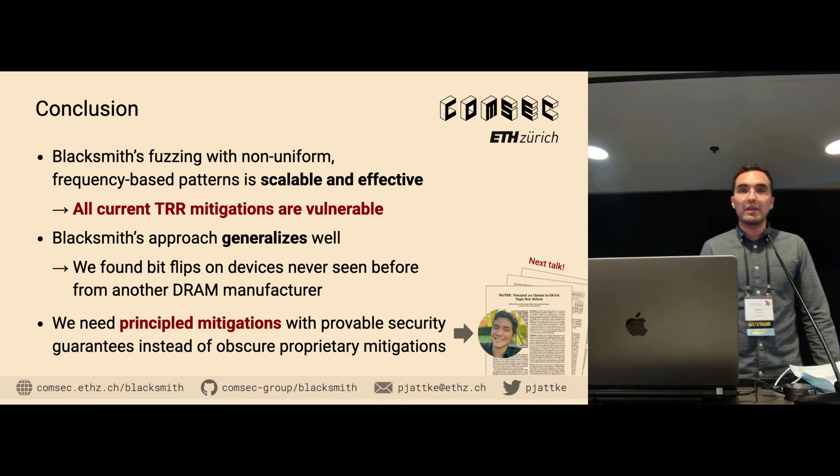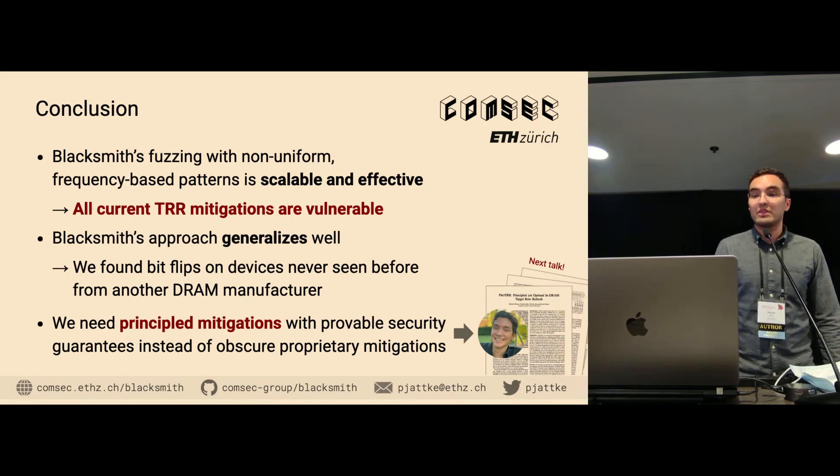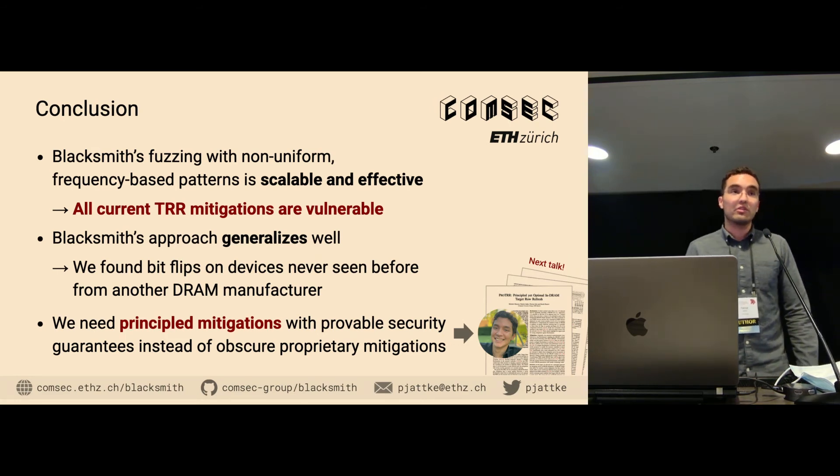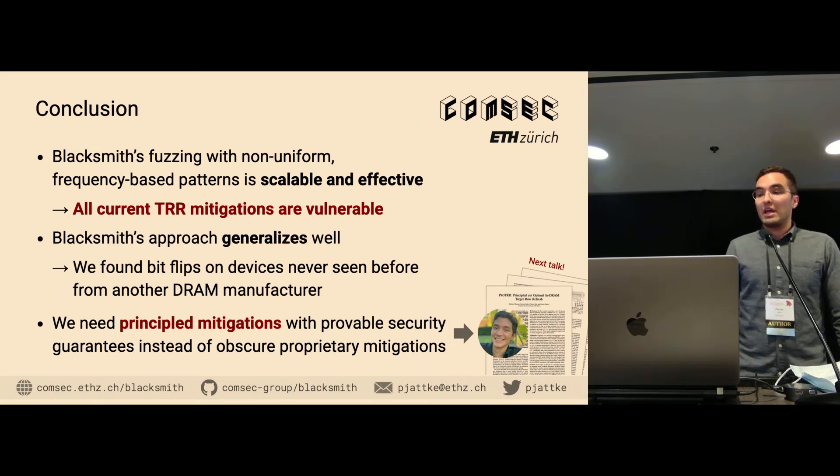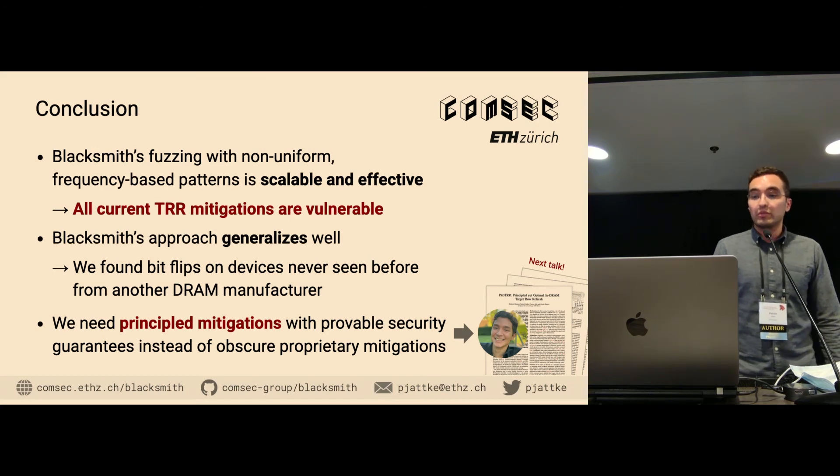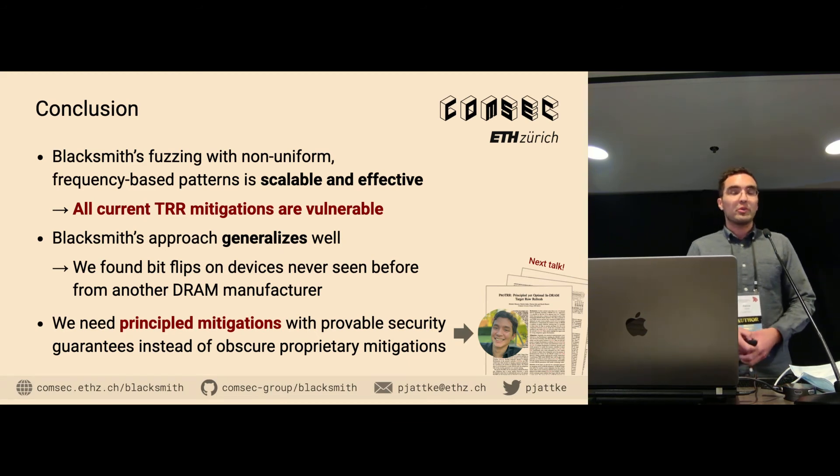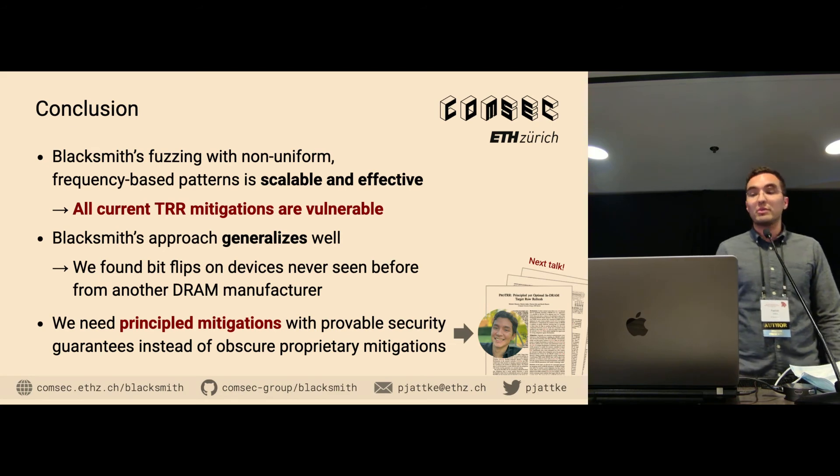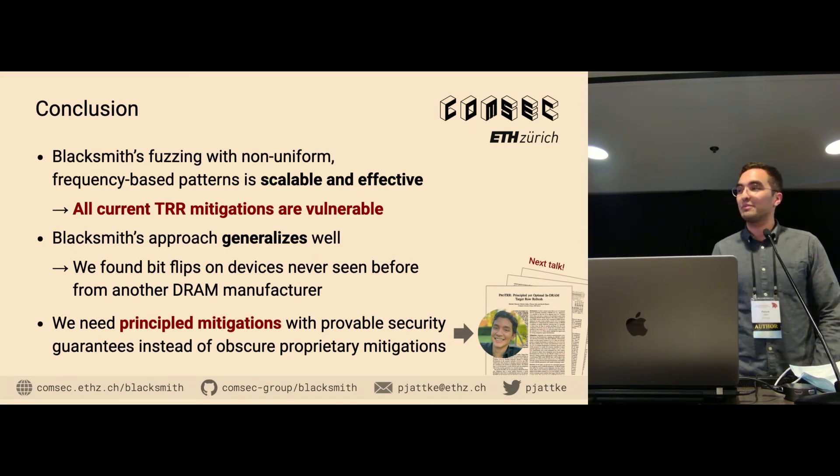So this concludes my talk. We've seen that Blacksmith with fuzzing and non-uniform frequency-based patterns is a very scalable and highly effective approach. And we showed that all current TRR mitigations are vulnerable. Blacksmith's approach also generalizes well. So there was another DRAM vendor that we did not include in our evaluation that approached us and wanted to know if their devices are safe. And we run Blacksmith on these devices and found bit flips in less than four hours, although we have never seen those devices before. So we didn't do any experiments and observations on them. And our work stresses that we really need principled mitigations with provable security guarantees instead of the obscure and proprietary mitigation that DRAM vendors currently use. And if you want to know how to design such principled mitigations, I kindly invite you to the talk of my colleague Michele about Protea R, principled yet optimal in DRAM target row refresh. Thank you very much for your attention.